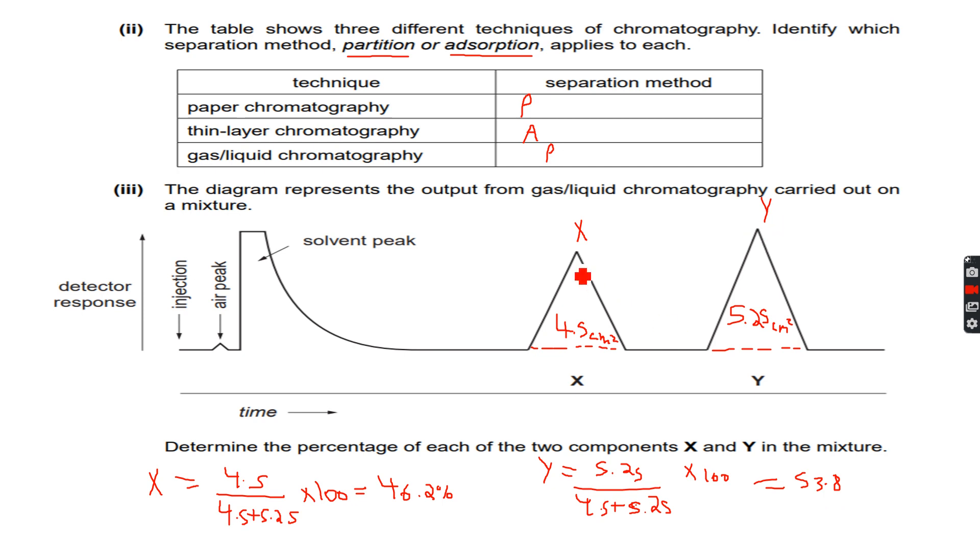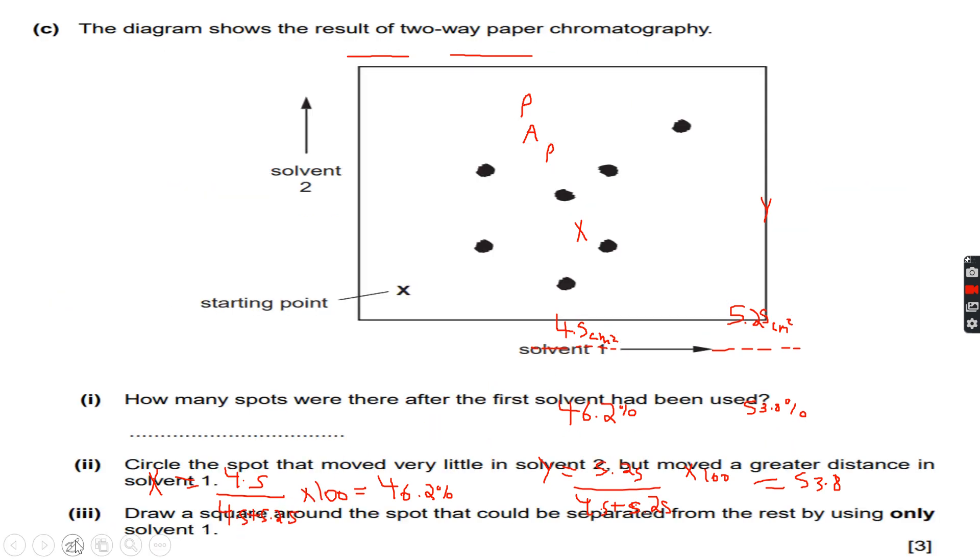The percentage composition of X we've calculated to be 46.2 percent, the percentage composition of Y we've calculated to be 53.8 percent, or you can say 46 percent and 54 percent. Now let's move forward. The diagram shows the result of two-way paper chromatography.